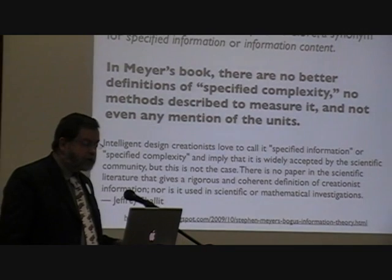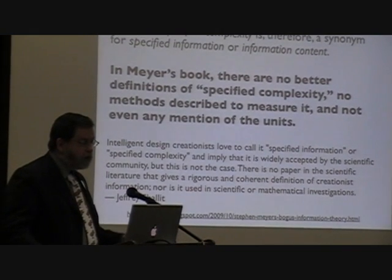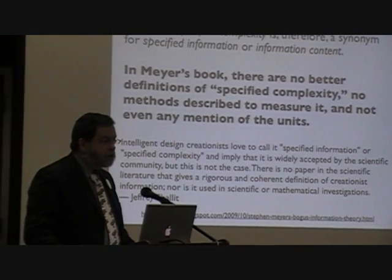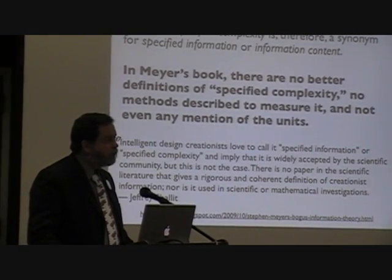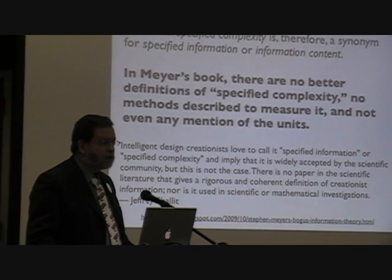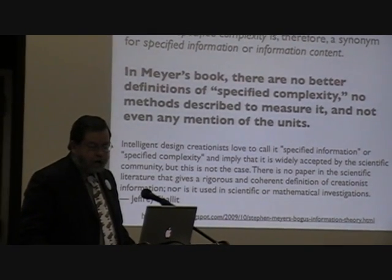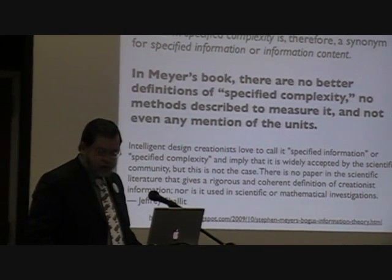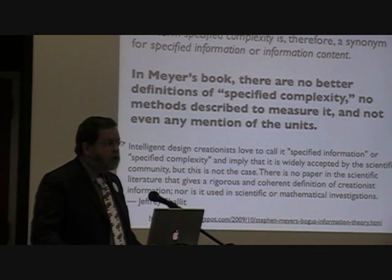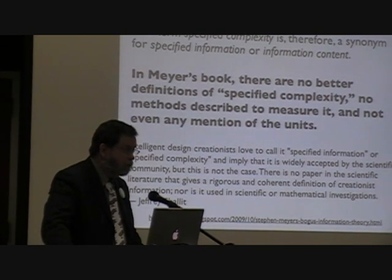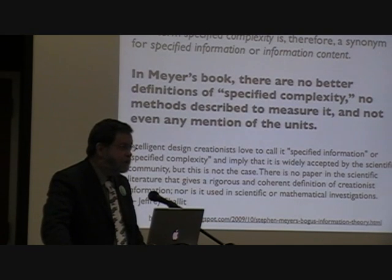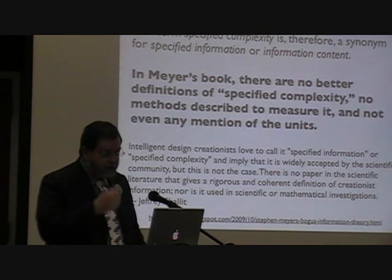He has a better name for specified complexity: it's called 'Creationist Complexity.' And the better name he suggests for the information concept is 'Info Shminko.' The information doesn't really matter. You can't measure it. You can just make up stories about it.